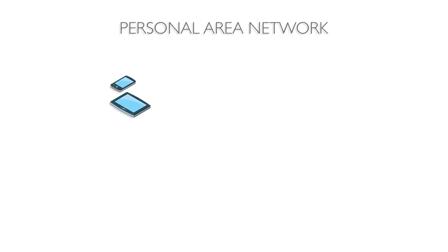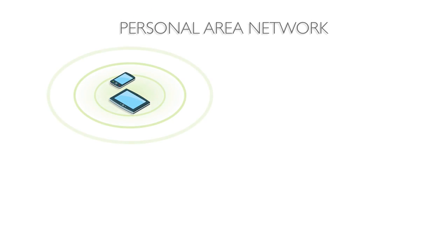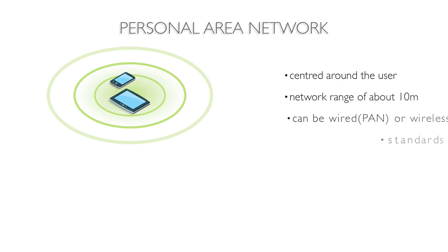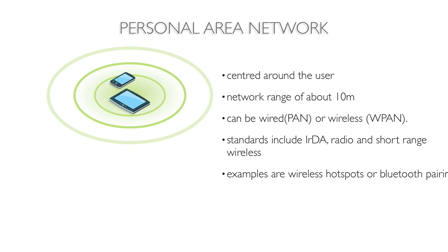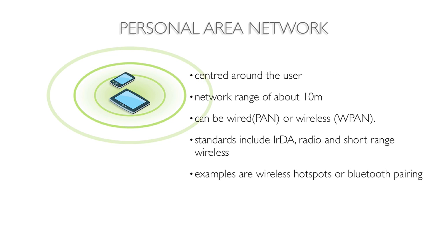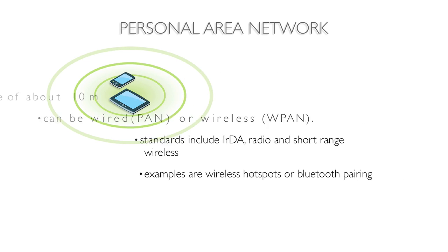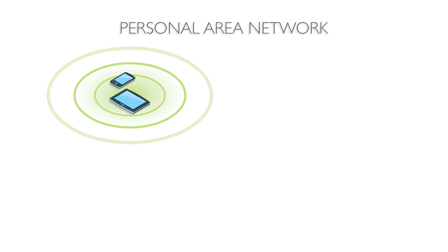A personal area network is used for communication among computer devices and peripherals in proximity to an individual's body, but may not belong to the person in question. These types of networks often use a single transmission media to pair the devices in the network over a 10-meter range. Types of transmission media can include USB, infrared (IRDA), Bluetooth which uses radio waves and is the most common, and short-range wireless transmissions such as Wi-Fi and RFID, which use microwaves. Devices in personal area networks are usually mobile devices, but also include hardware peripherals such as Bluetooth keyboards.